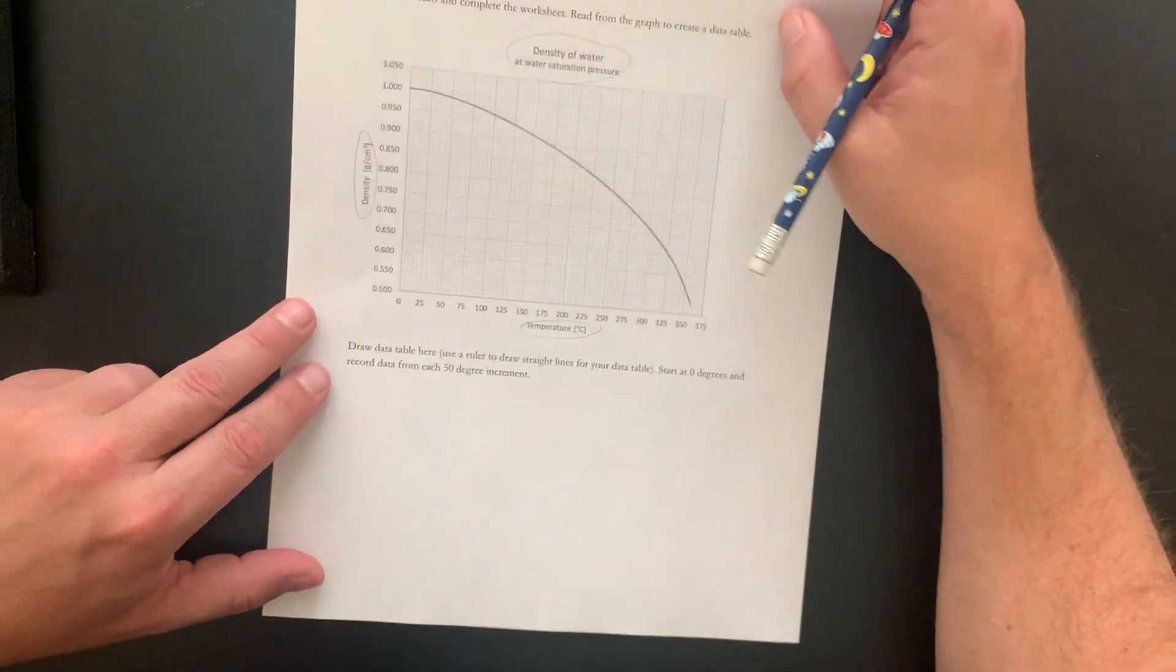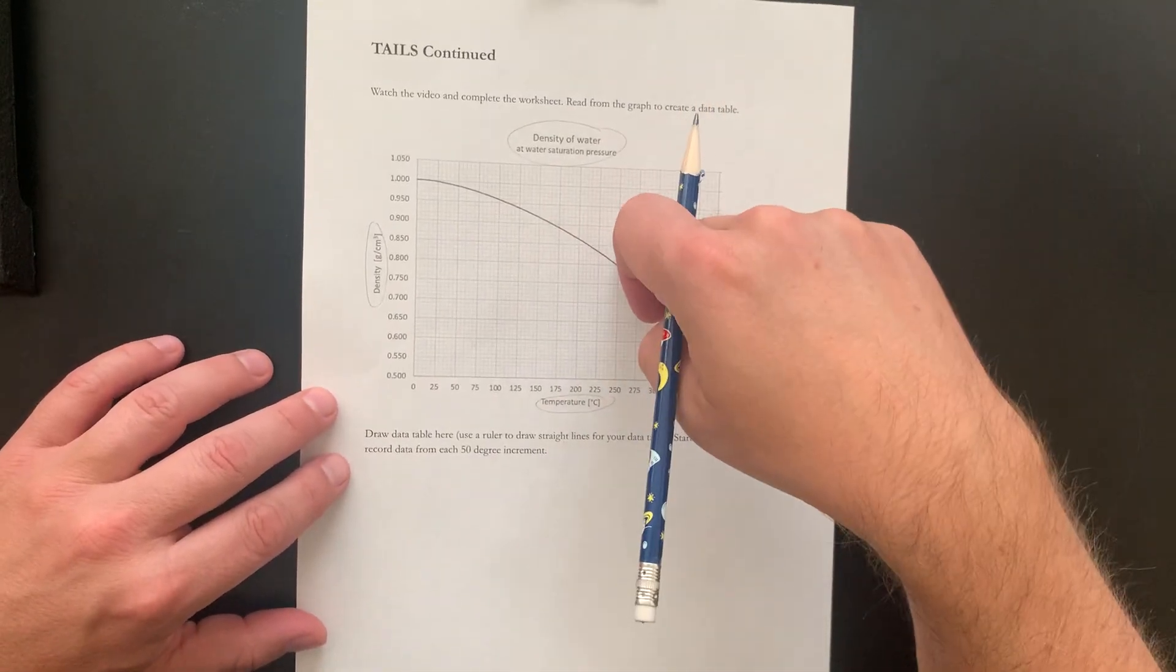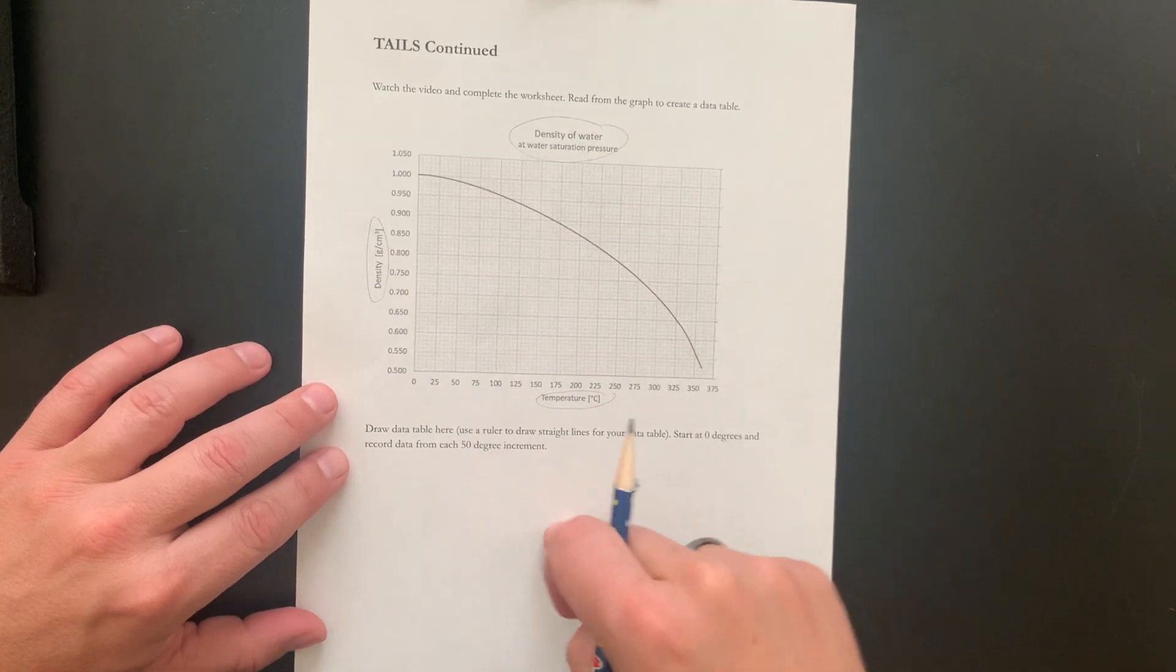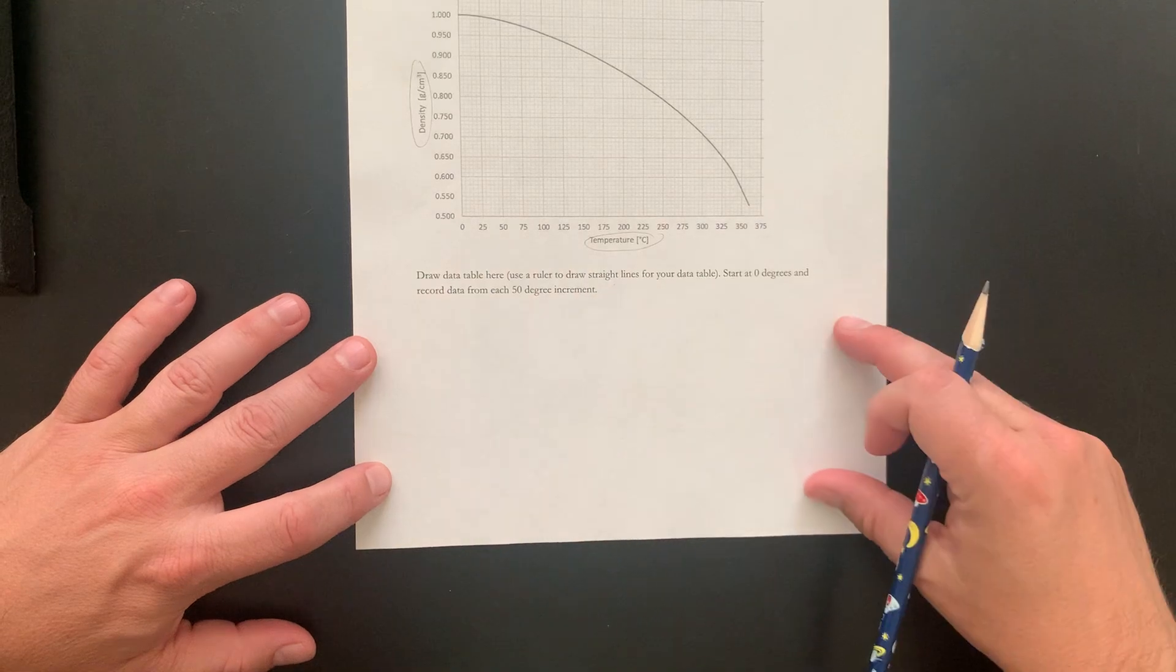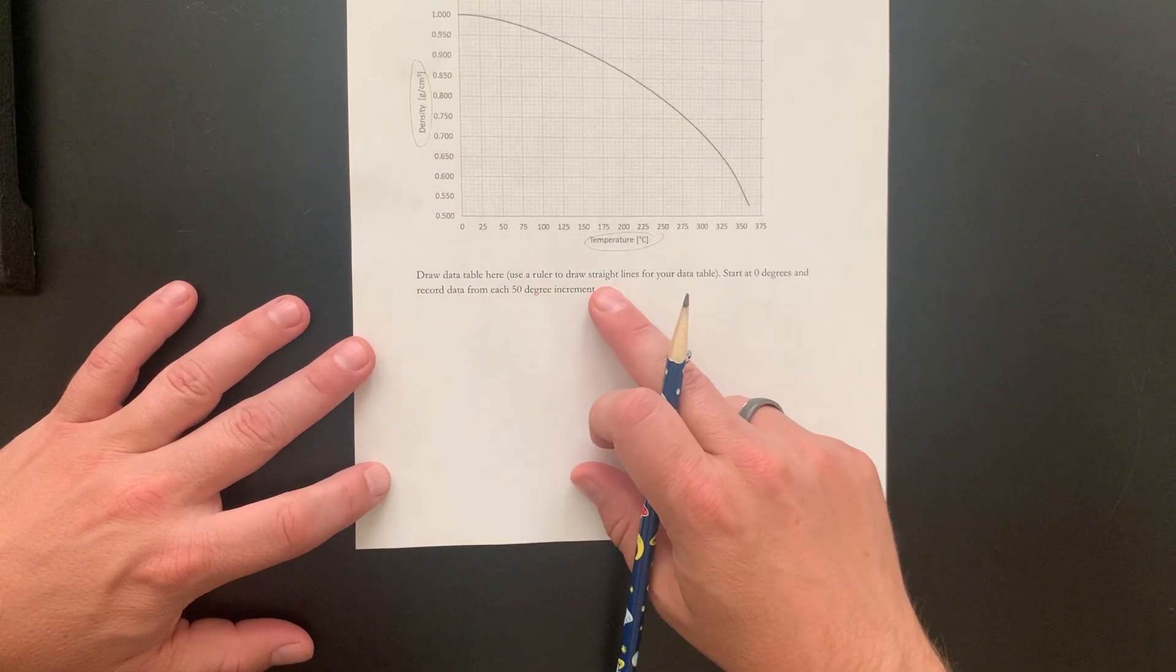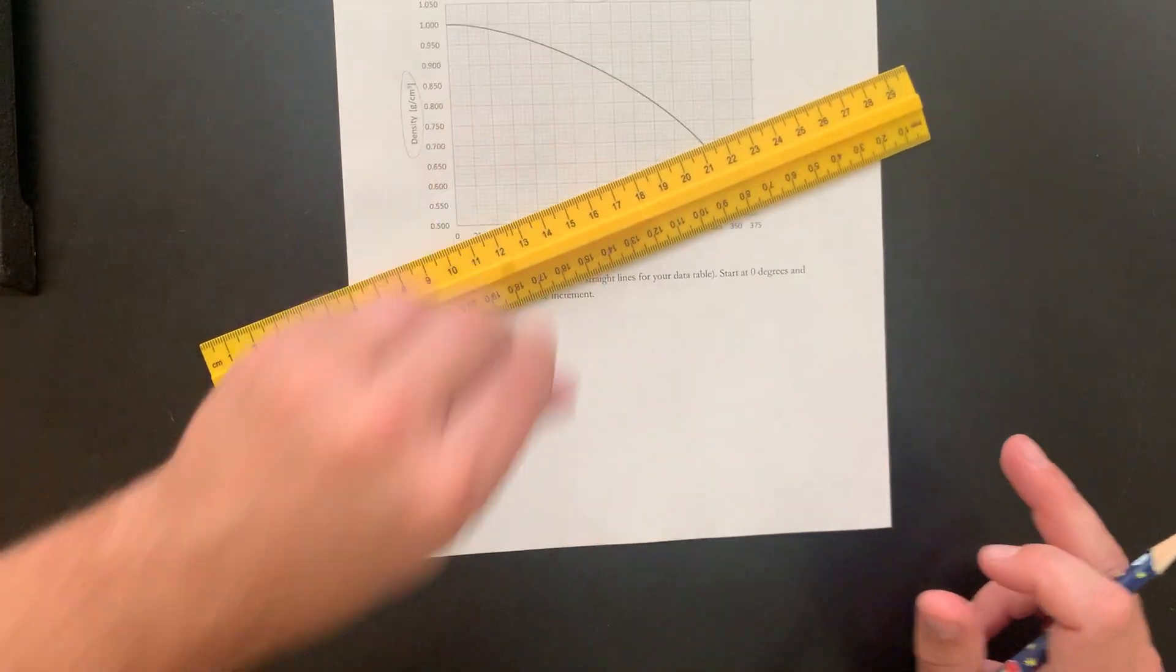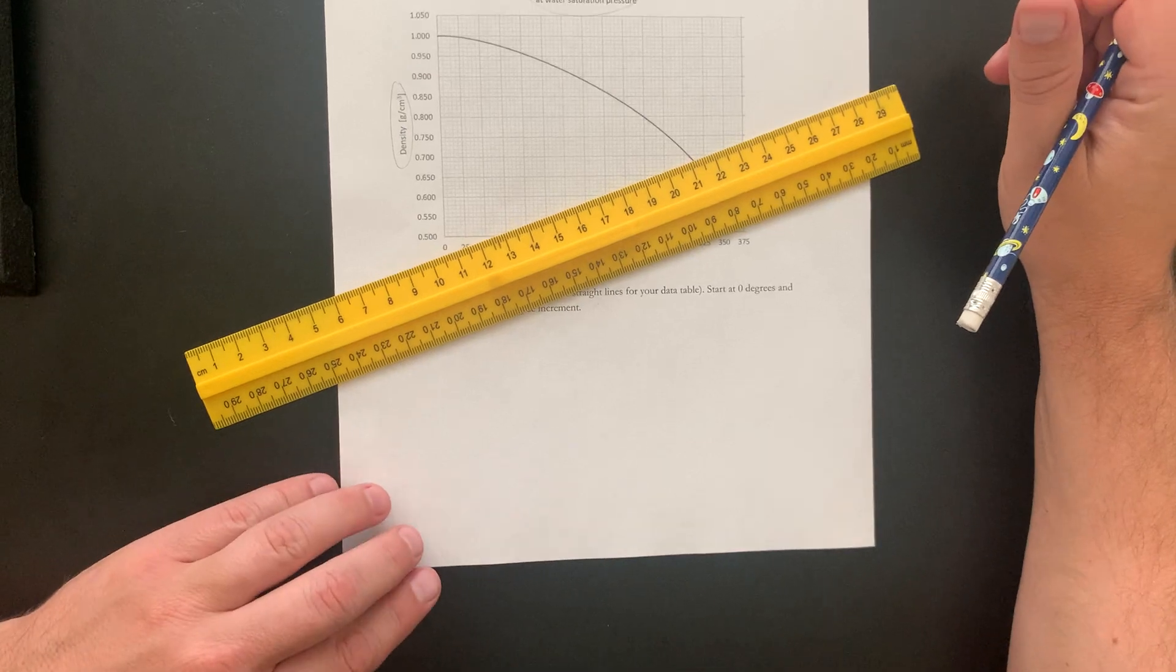So what our job is now is to read this graph and draw a data table down here at the bottom. So it says, draw your data table here, use a ruler. So make sure you're using a ruler or something straight for your lines.